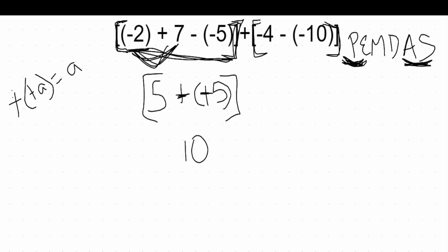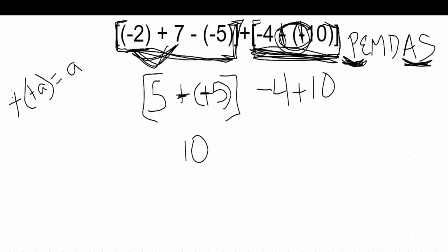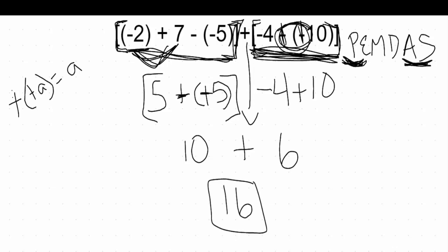Now we work on the right set of square brackets. We also have the double negative rule inside there because we have negative 4 minus a negative 10. Those two negative signs cancel out to plus signs, so really we have negative 4 plus 10. Adding with different signs: 10 minus 4 is 6, and that's a positive 6. Dropping down the plus sign between the brackets, our final step is 10 plus 6, which is 16. So 16 is our final answer.